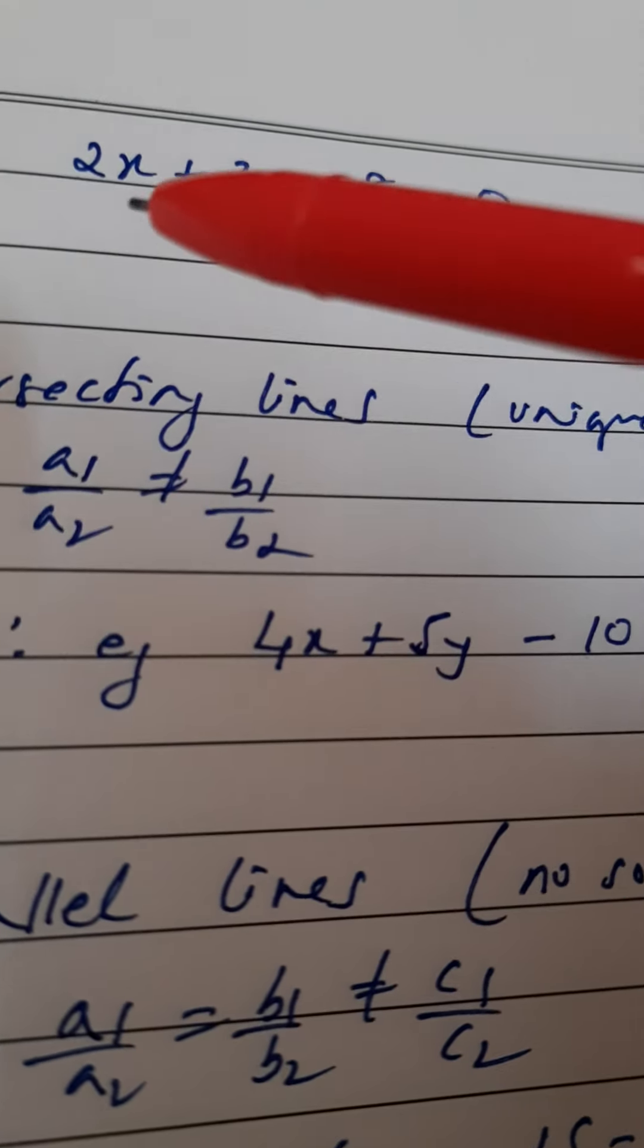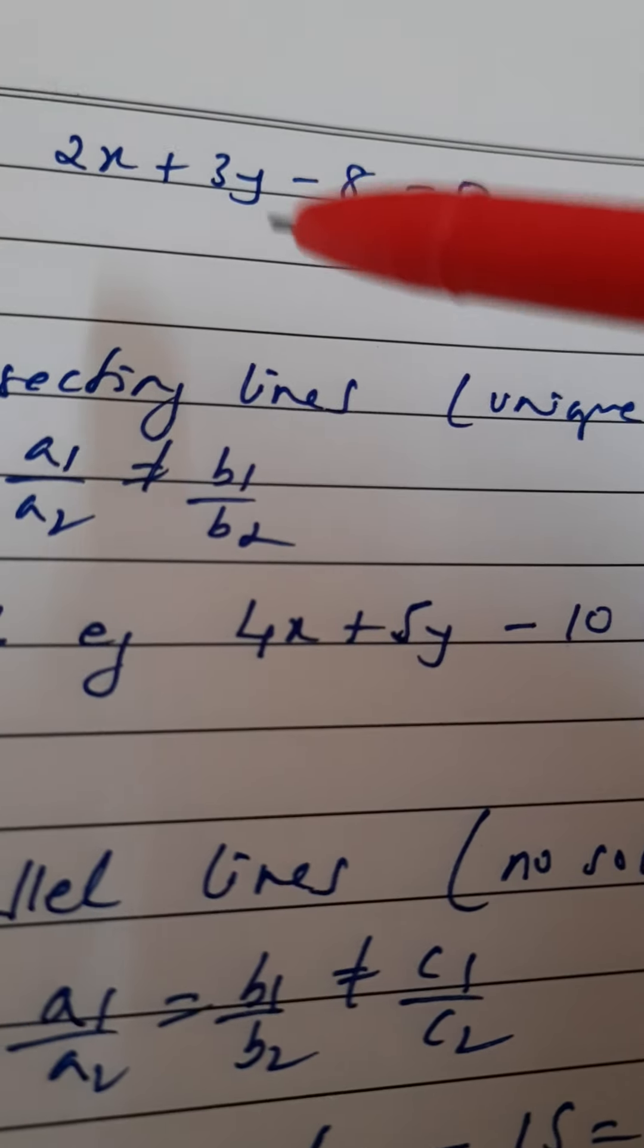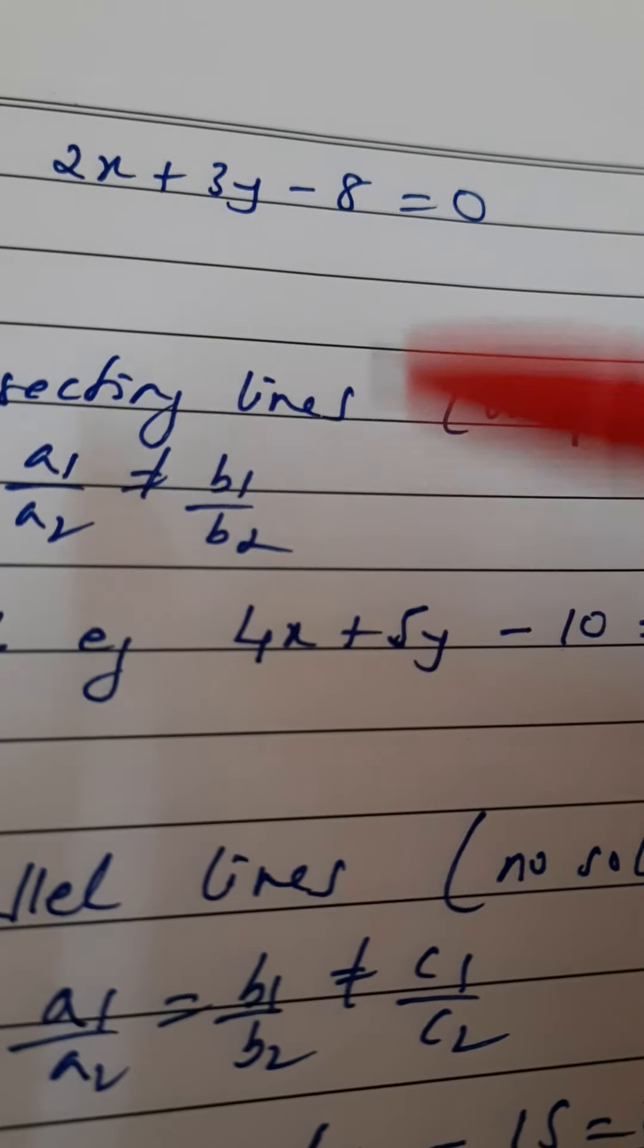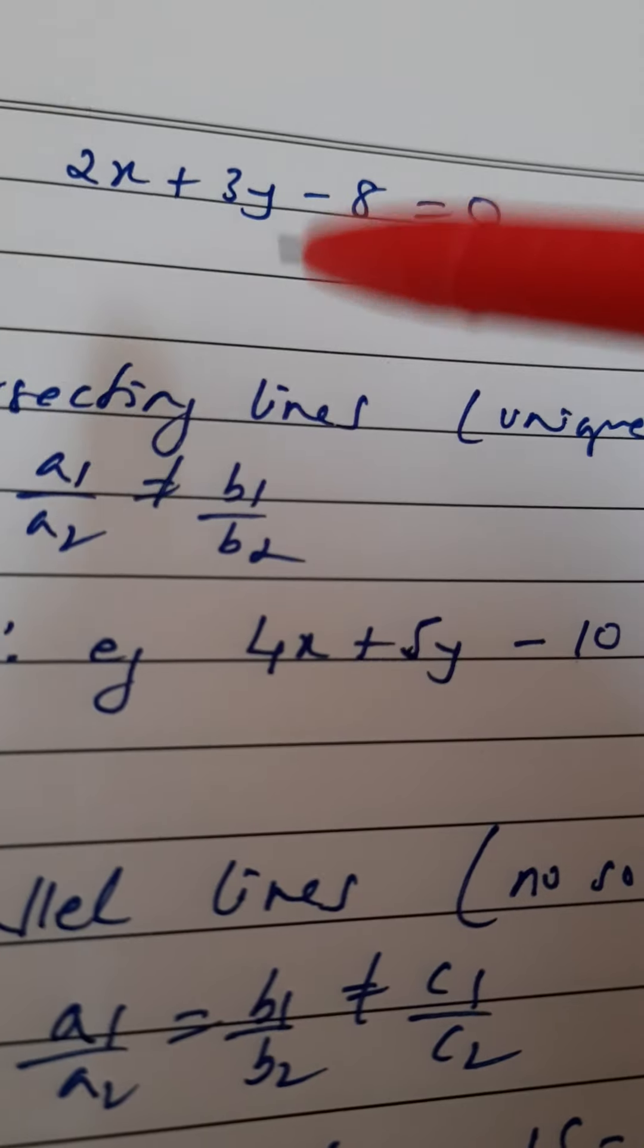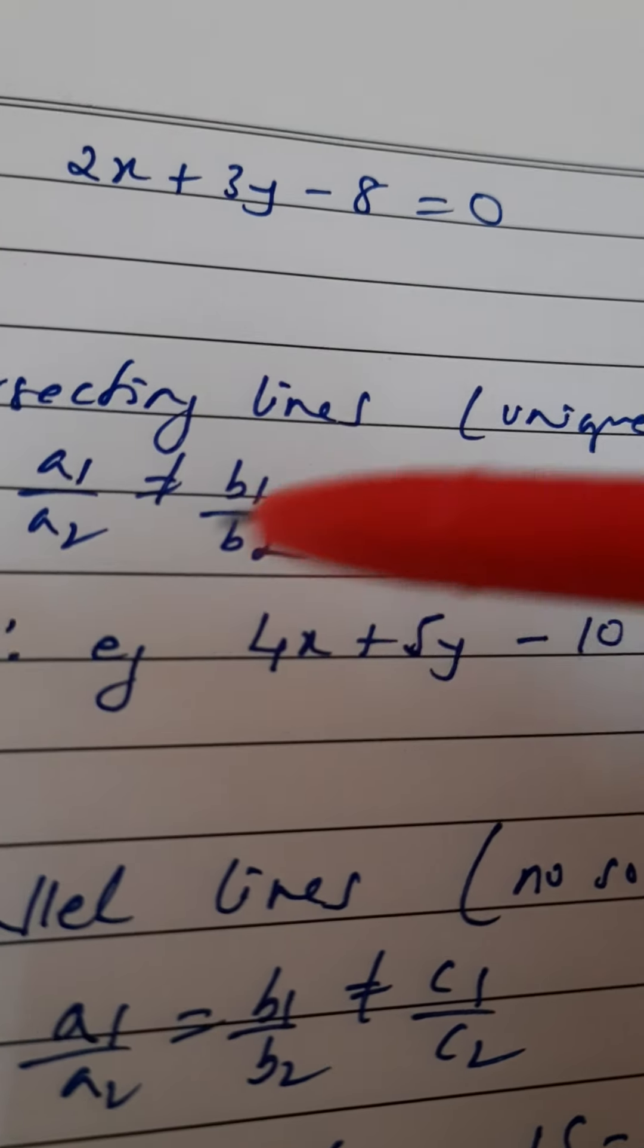I have written 5 here, so obviously a1/a2 and b1/b2 are not equal. You need to write any equation which satisfies this condition—that the coefficient of x, that is a1/a2, should not be equal to the ratio of coefficients of y.